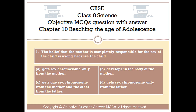Question number 1. The belief that the mother is completely responsible for the sex of the child is wrong, because the child: Option A gets sex chromosome only from the mother. Option B develops in the body of the mother. Option C gets one sex chromosome from the mother and the other from the father. Option D gets sex chromosome only from the father.